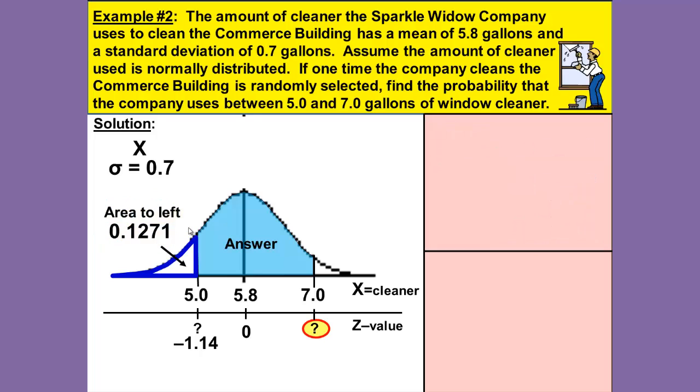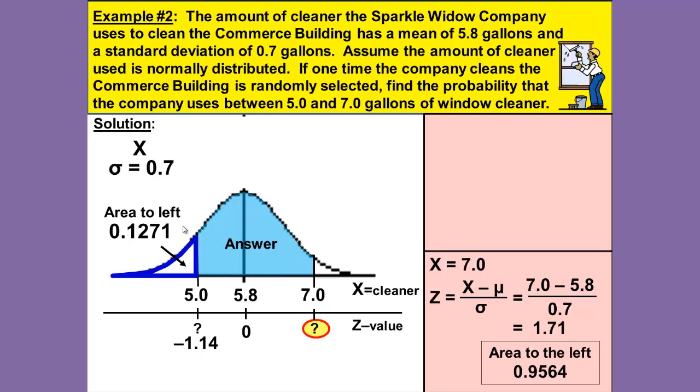Now let's repeat that process for X equals 7.0. Same formula, X minus mu over the sigma. 7.0, this time with our X being 7.0 minus the mean of 5.8 divided by 0.7 the standard deviation. Calculate that out and we get Z equals 1.71. Look that up in our table.